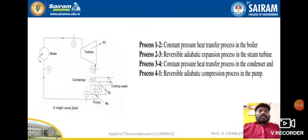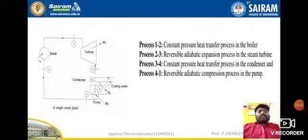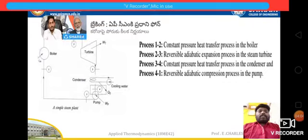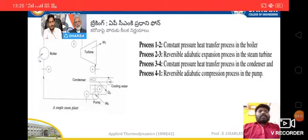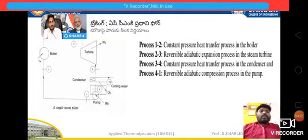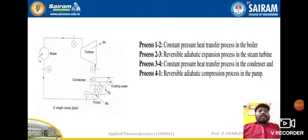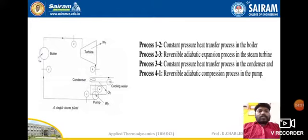The 3 to 4 process is a constant pressure heat transfer process in the condenser, where heat is transferred to the surroundings. The 4 to 1 process is a reversible adiabatic compression process in the pump — adiabatic compression with a small compression taking place in the pump.